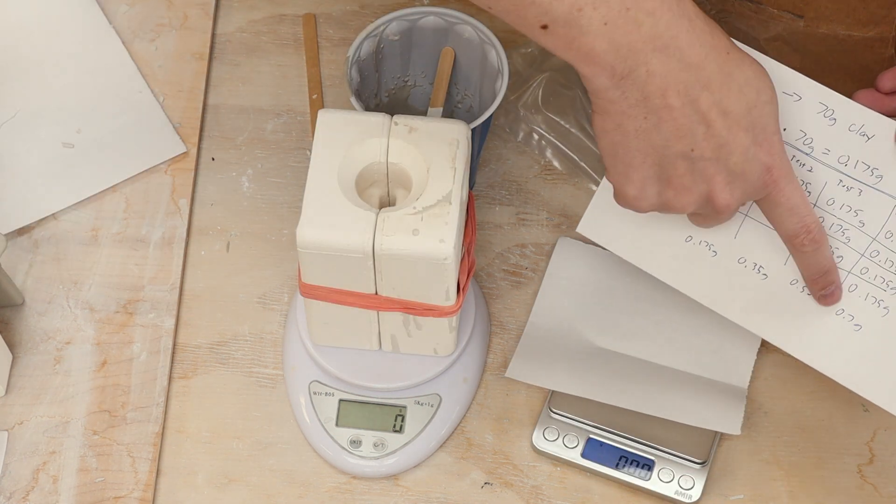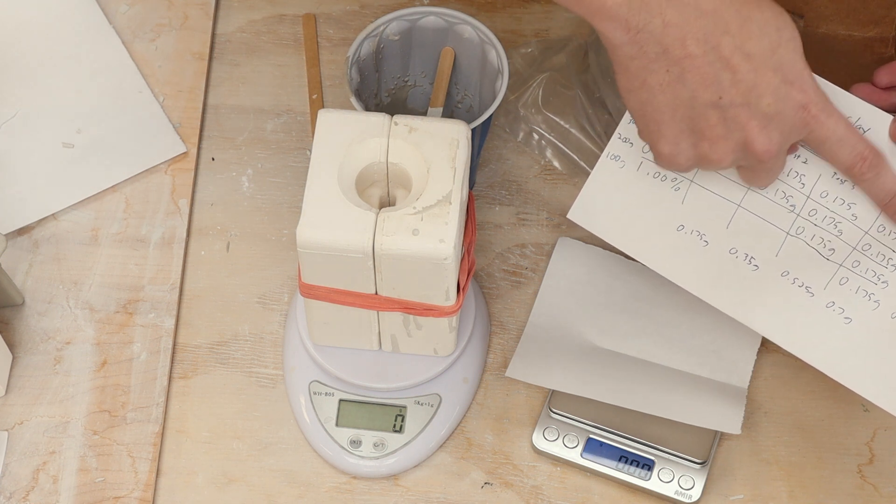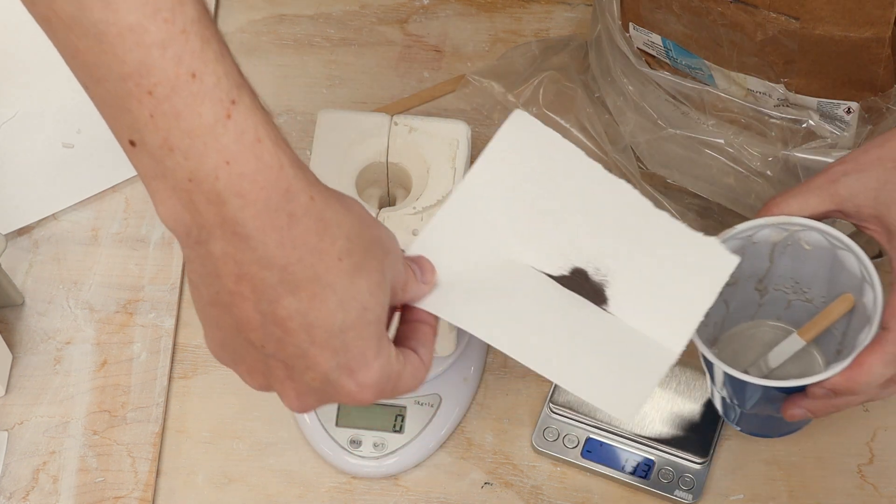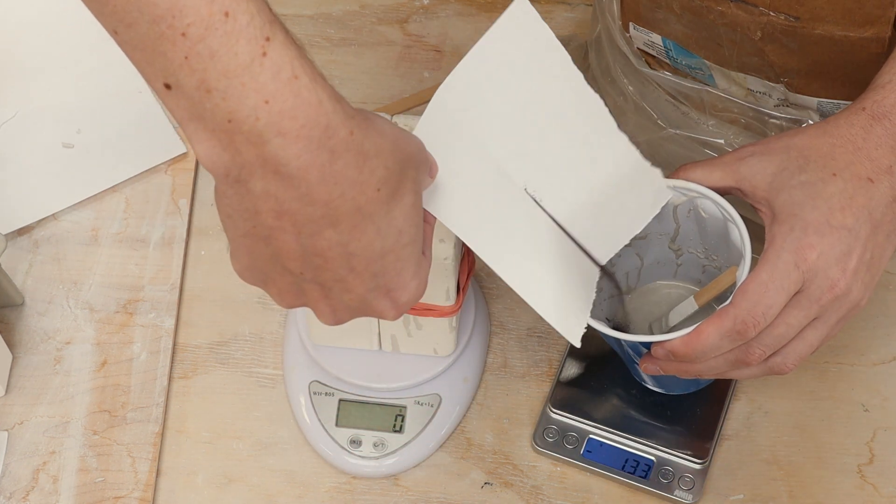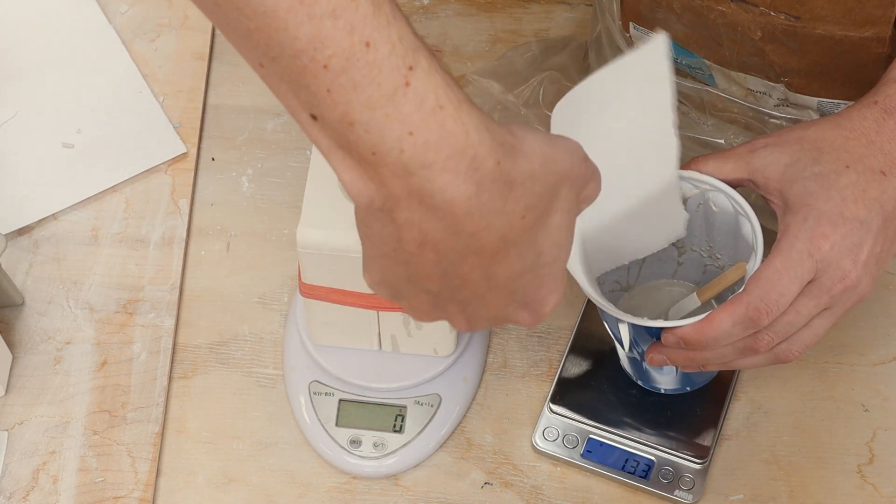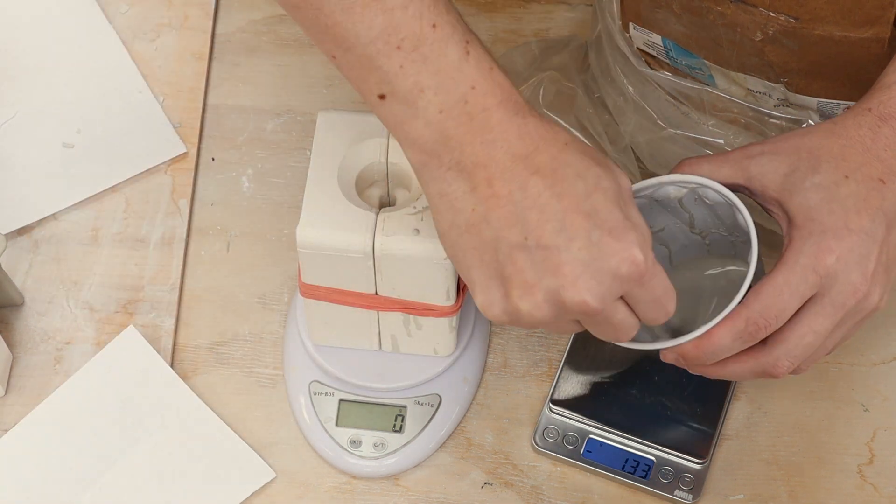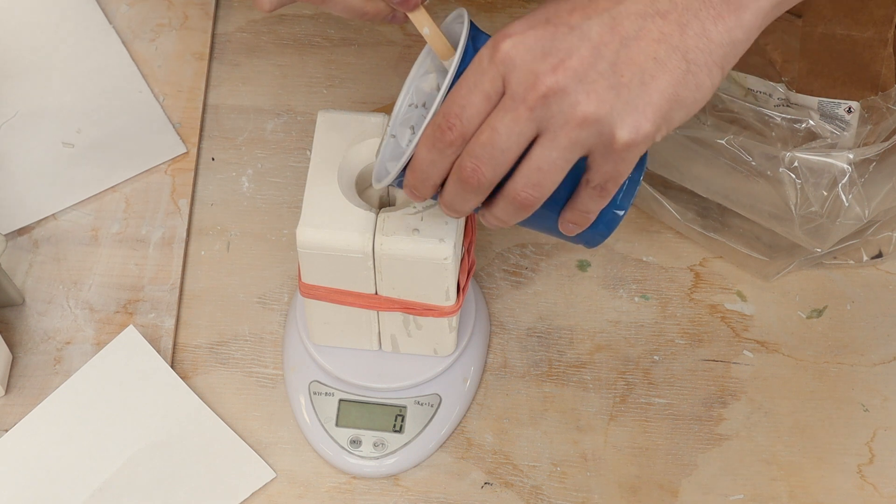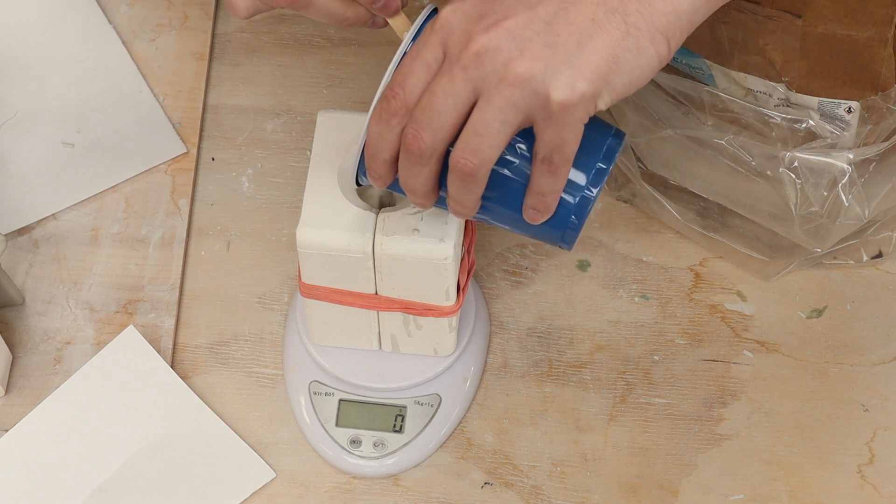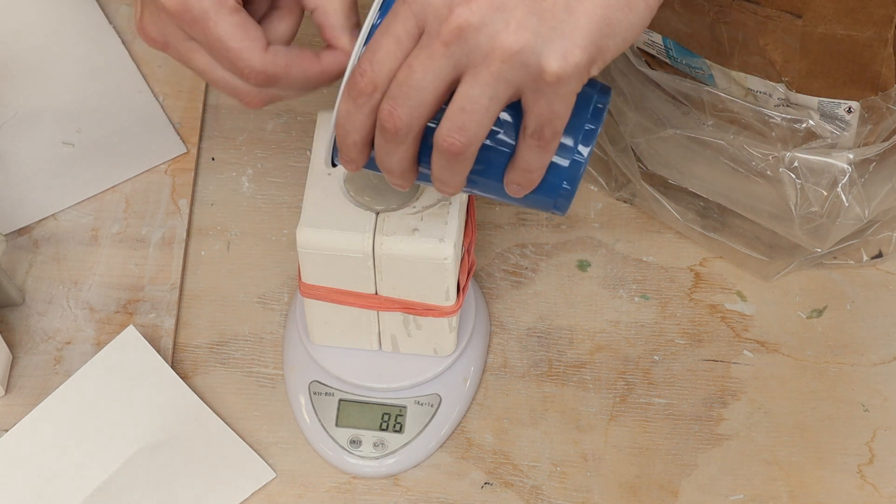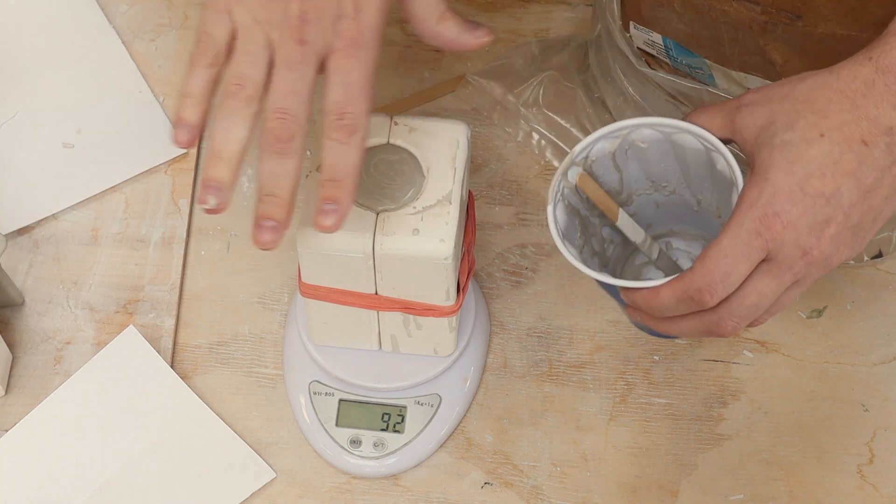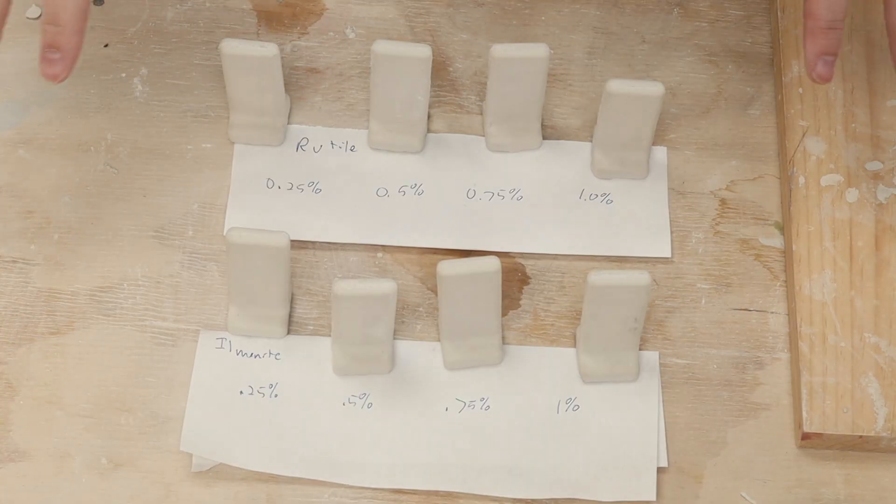And then finally, for my last test tile, I need another 0.175. That will get it up to 0.7, which is 1 percent. And we should have just about 100 grams left. All right, I probably have a few more grams left in there, but I think that's close enough.